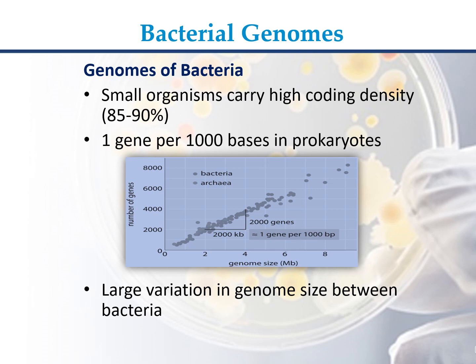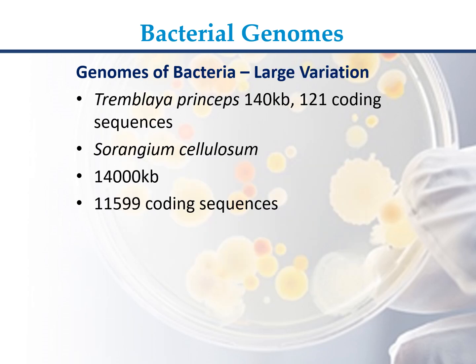There is large variation in genome size between bacteria. For example, Tremblaya princeps has a genome of 140 Kb with 121 coding sequences, while Sorangium cellulosum has 14,000 Kb with 11,599 coding sequences.